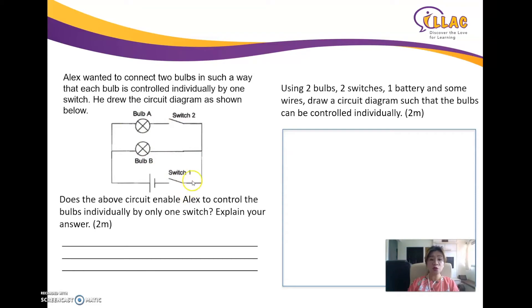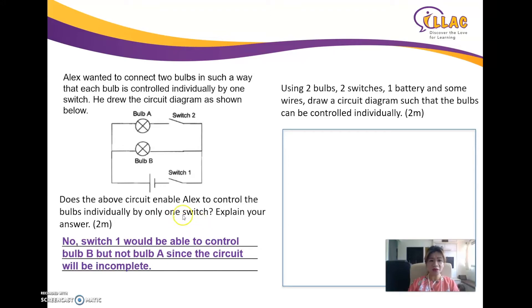If switch one is closed, that forms a complete round and bulb B will definitely light up. But bulb A will not light up because there is an open circuit there. So the above circuit does not enable Alex to control the bulbs individually — switch one can control B, but not bulb A, since that circuit remains incomplete.